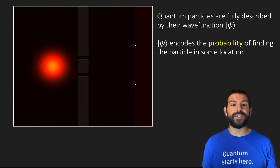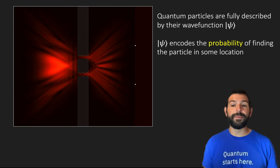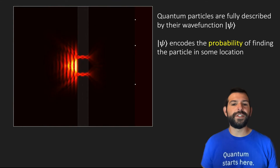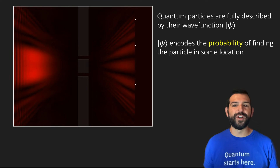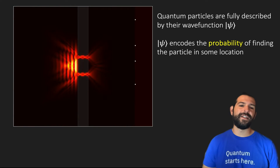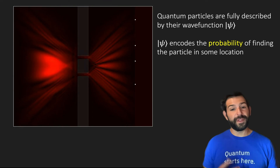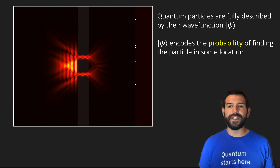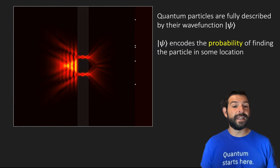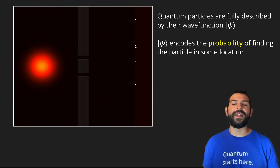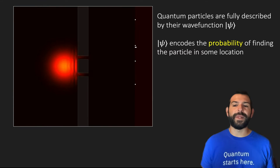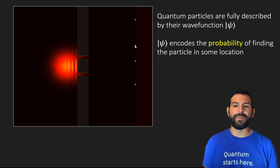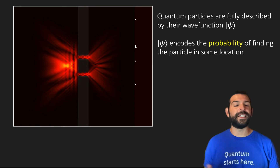The particular place where the particle is measured is completely probabilistic, but the statistics are fully determined by how the wave function looks right at the screen. There is also a large probability of the wave reflecting back, and therefore finding the particle on the left side of the plate, but here we focus on the experiments in which the particles are detected on the screen.